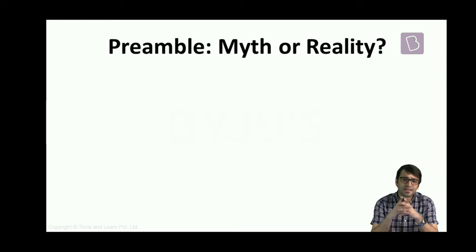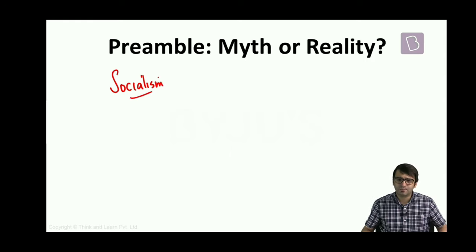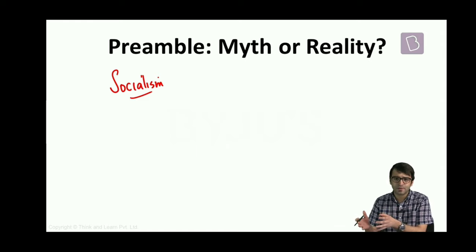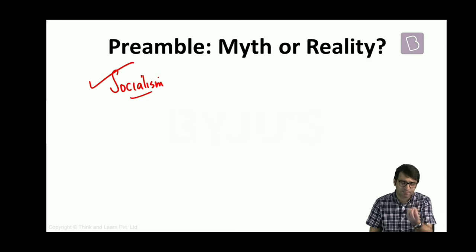Our preamble says that the nature of the Indian state has to be socialism. But what happened after the economic reforms of 1991? After the liberalization, privatization, globalization, we have openly and shamelessly embraced capitalism. So, are we not violating socialism principle that is mentioned in the preamble?